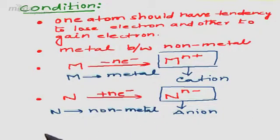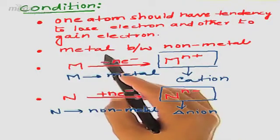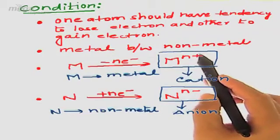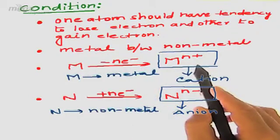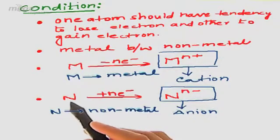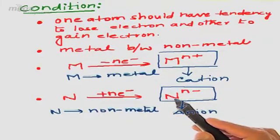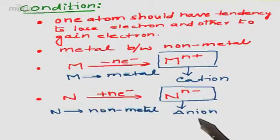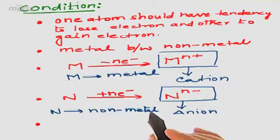These are the things we observe in ionic bonding. When one atom has a tendency to lose electrons and the other has a tendency to gain electrons — meaning one atom is metallic and the other is non-metallic — we have ionic bonding. The metal after the loss of electrons is converted into a positively charged cation, and the non-metal after gaining electrons from the metal is converted into a negatively charged anion. So basically, during ionic bonding, cations and anions are formed.